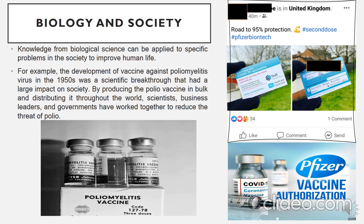Finally, biology and society: knowledge from biological science can be applied to specific problems in society to improve human life. For example, the development of a vaccine against the poliomyelitis virus in the 1950s was a scientific breakthrough with a large impact on society. By producing the polio vaccine in bulk and distributing it throughout the world, scientists, business leaders, and governments worked together to reduce the threat of the disease. Currently, we also have the ongoing development of COVID-19 vaccines.